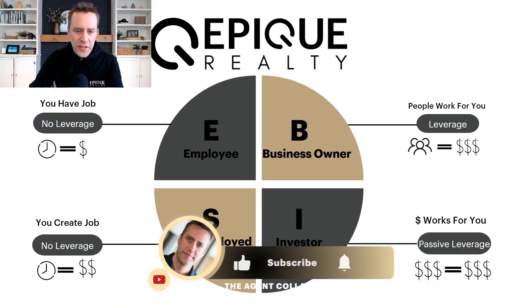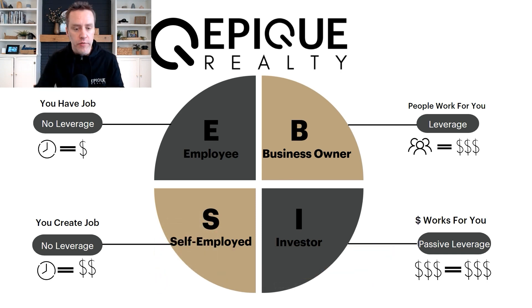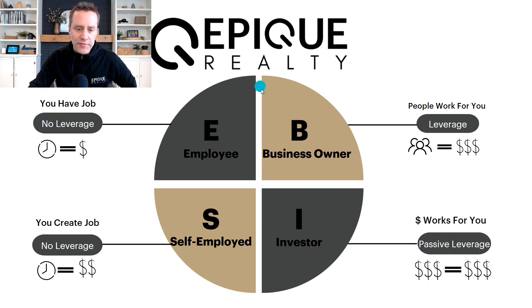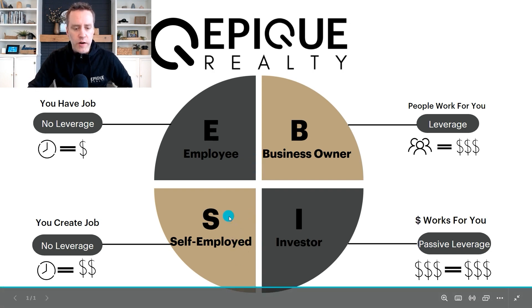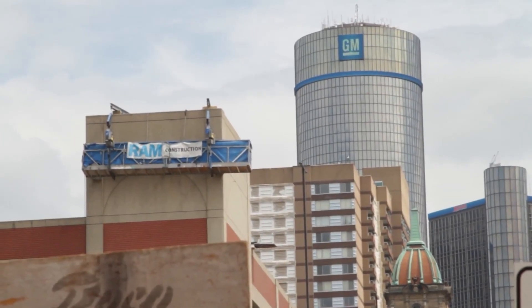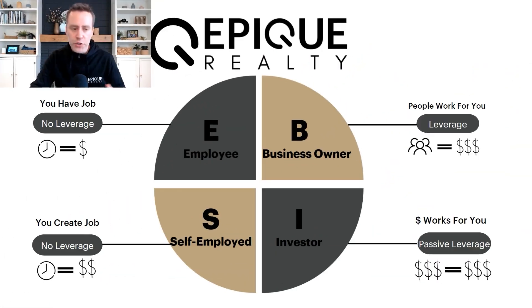The Cash Flow Quadrant breaks things down into four different areas: Employee, Self-Employed, Business Owner, and Investor. When we talk about leverage, we want to have it in our business. On the left side of the quadrant, you have Employee and Self-Employed — these are the areas where you don't have leverage. As an employee, whether you're working for General Motors or Ford, you trade your time for money.